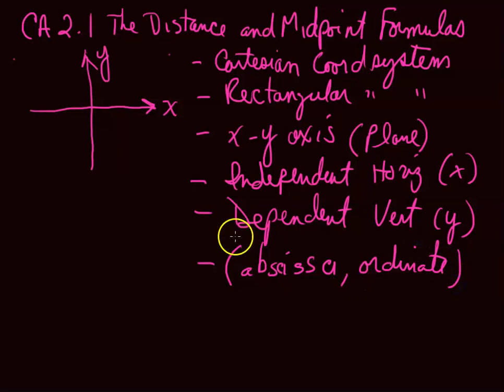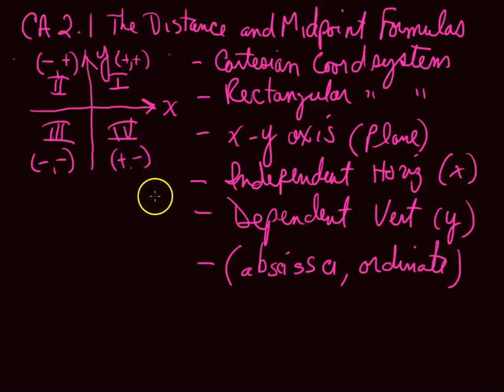There are quadrants that's divided into four of them. Start counting counterclockwise: goes from positive positive, two is negative positive, three is negative negative, and four is positive negative. Okay, so this center is called the origin. I think that's all we need to try to remember about this because we're going to